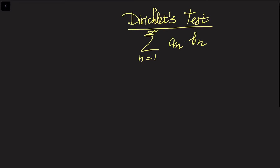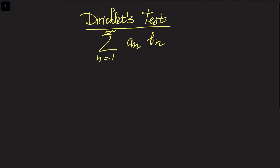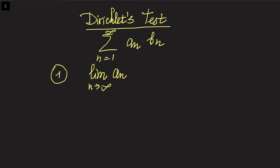We are going to use the so-called Dirichlet test, which basically tells us that if your series is given in a form of aN times bN, it should fulfill the following two conditions to be convergent. The first condition tells us that we just need to test the limit of aN when n goes to infinity, and this should be equal to 0.